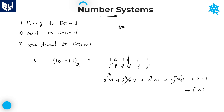2 power 5 is equal to 32. 32 plus 2 power 3, which is 8, plus 2 power 1, which is 2, plus 2 power 0, which is 1. Now you can add all these values: 32 plus 8 is 40, plus 2 is 42, plus 1 is 43. Total 43.